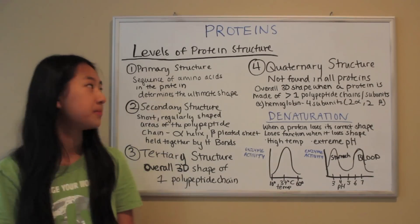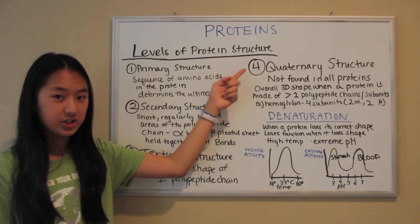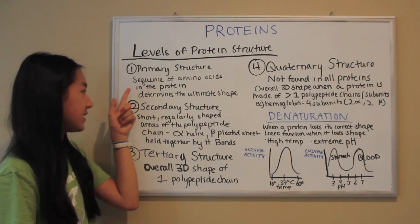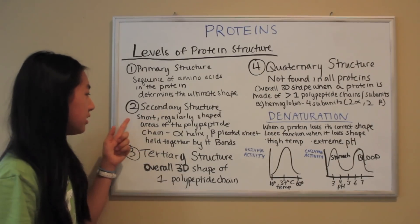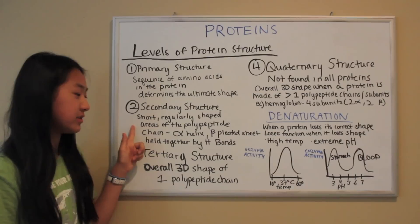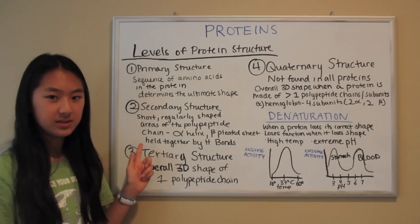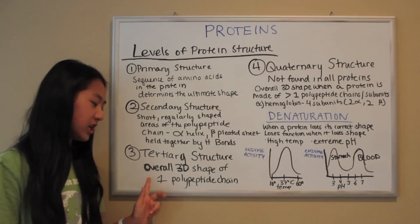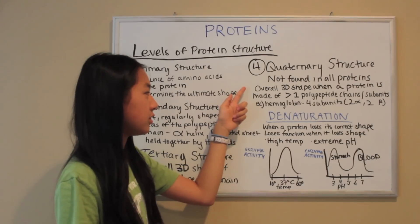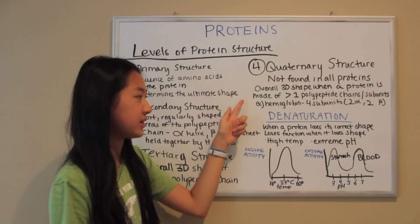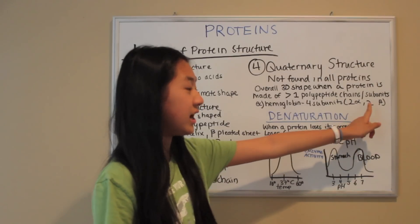There are four levels of protein structure: the primary structure, secondary structure, tertiary structure, and quaternary structure. The primary structure is the sequence of amino acids in the protein, and this sequence determines the ultimate shape of the protein. The secondary structure consists of short, regularly shaped areas of the polypeptide chain such as the alpha helix or the beta-pleated sheet, held together by hydrogen bonds. The tertiary structure is the overall 3D shape of one polypeptide chain. The quaternary structure is not found in all proteins but is the overall 3D shape when a protein is made of more than one polypeptide chain or subunit — for example, hemoglobin is made of four subunits: two alpha helixes and two beta-pleated sheets.